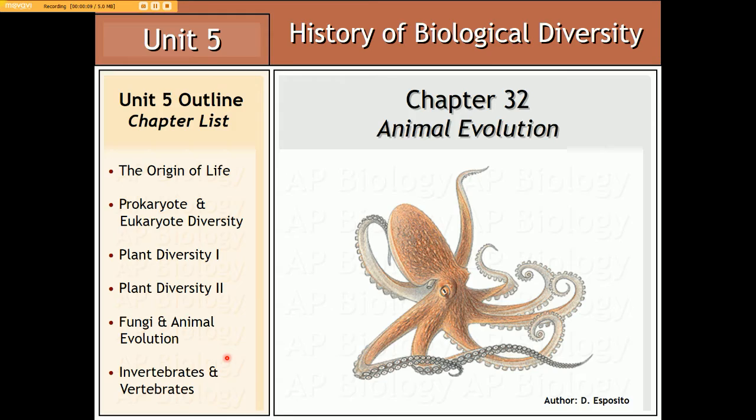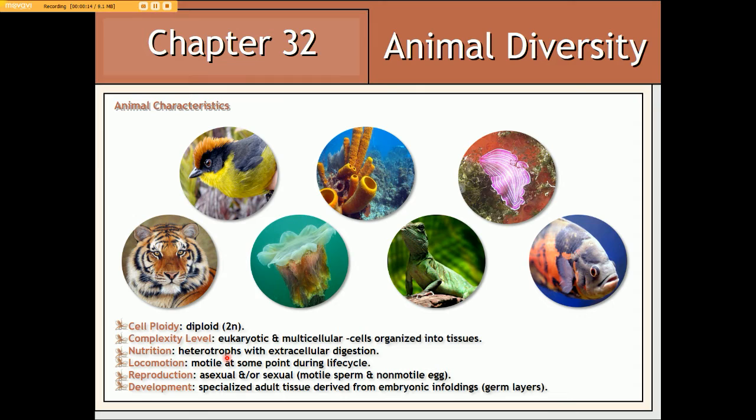Despite being extremely diverse, animal groups do share certain fundamental characteristics with one another. For example, all animal groups are diploid — in other words, they all possess two complete chromosome sets. Furthermore, all animals are eukaryotic as well as being multicellular, with all of their cells organized into specialized tissues.